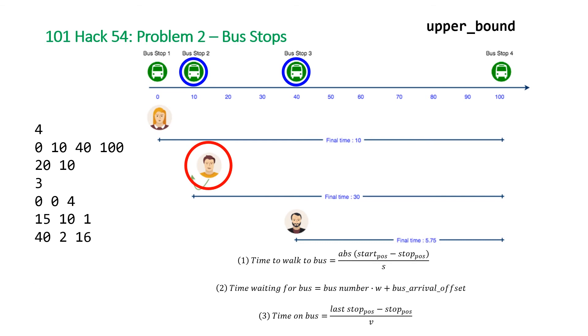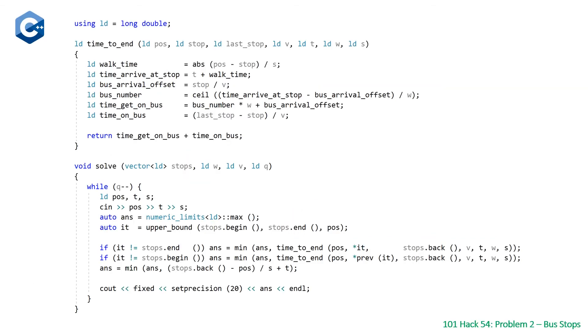So let's take a look at our code. Here is our code, we have two functions: solve, our main function below, and time_to_end which will calculate the time for each individual to get to the end of the street.